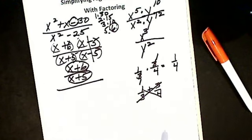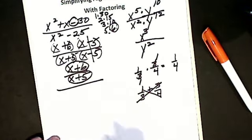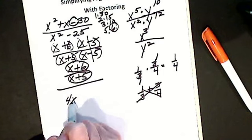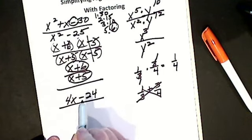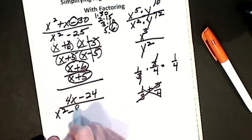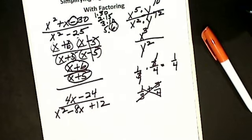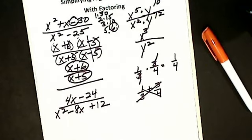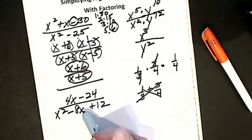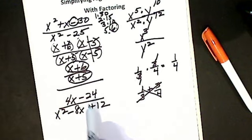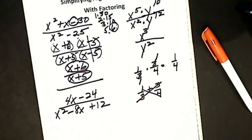Let's try another one: 4x minus 24 divided by x squared minus 8x plus 12. The first thing I have to know — a really big deal — is that I can't start canceling. I can't cancel the 4 and the 8, I can't cancel the 12 into the 24, I can't cancel the x's, because I've got terms all over the place. So I factor the numerator, factor the denominator, and change everything to factors.